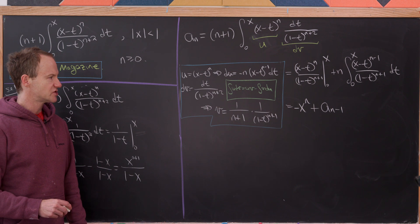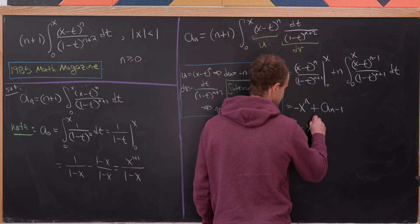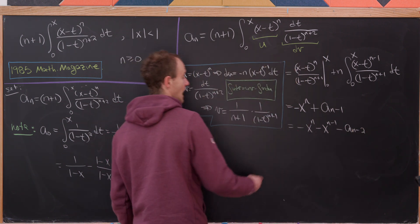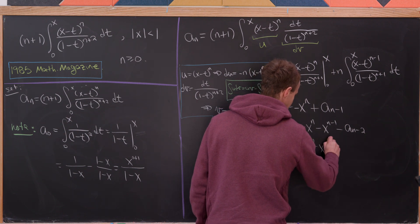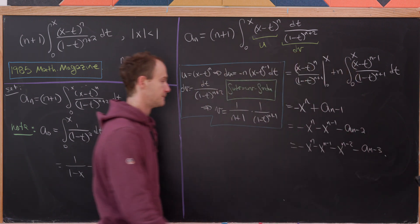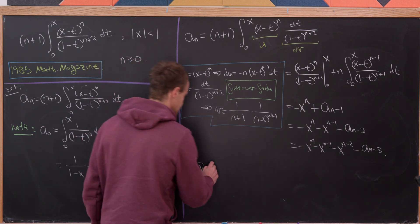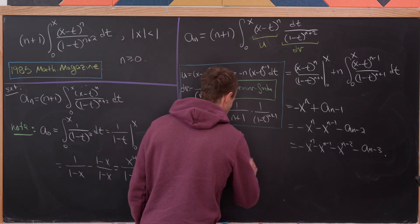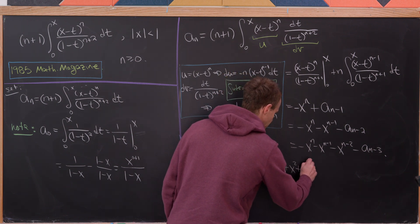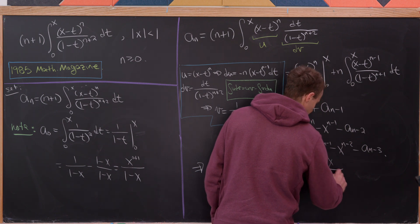The remaining integral is exactly a sub n minus 1. So we have the recurrence a sub n equals minus x to the n plus a sub n minus 1. Applying this recursively: a sub n equals minus x to the n minus x to the n minus 1 minus a sub n minus 2, and continuing all the way down to a sub 0.